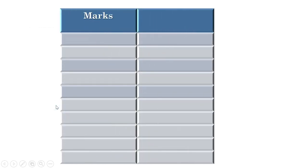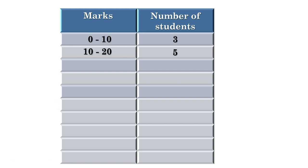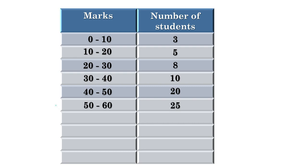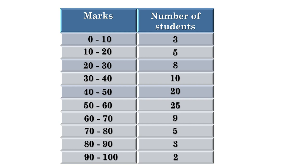If we write all the marks and their frequencies it will be a big table. So instead of taking all the marks, we can take a mark range such as 0 to 10, 10 to 20, etc., and the number of students who got marks within that range — then we get a small, understandable table. For example, there are 3 students whose marks are from 0 to 10; we cannot know their exact marks, only that they are in that range.